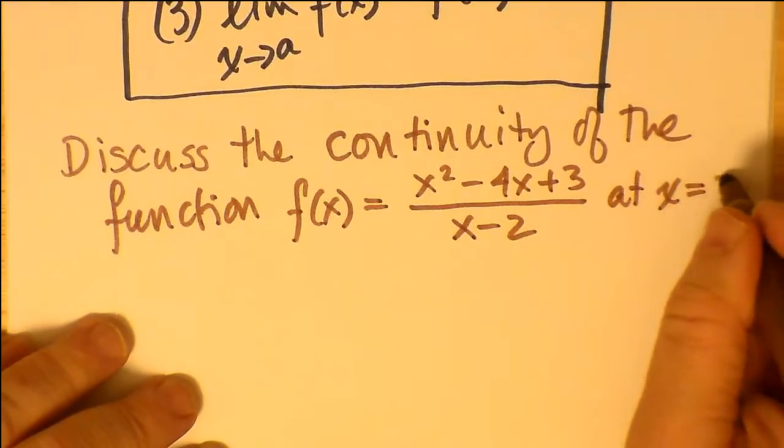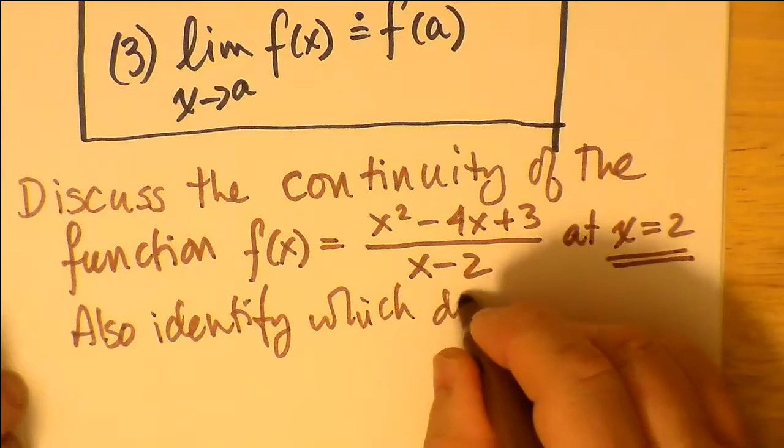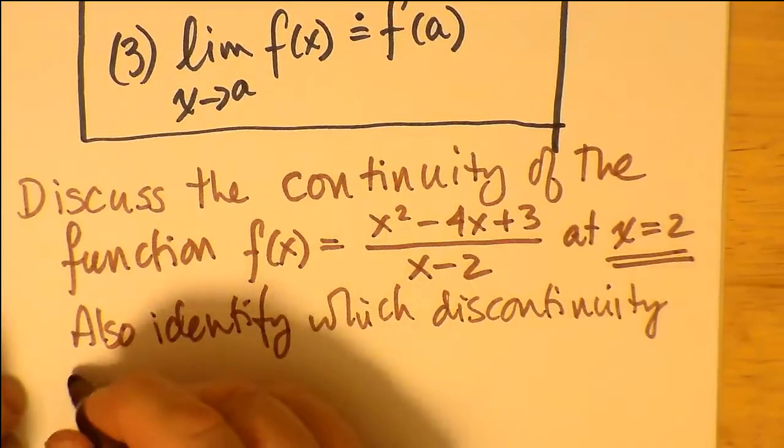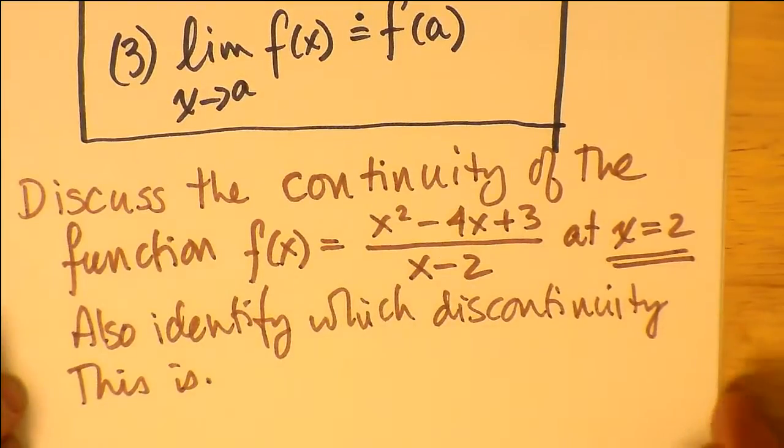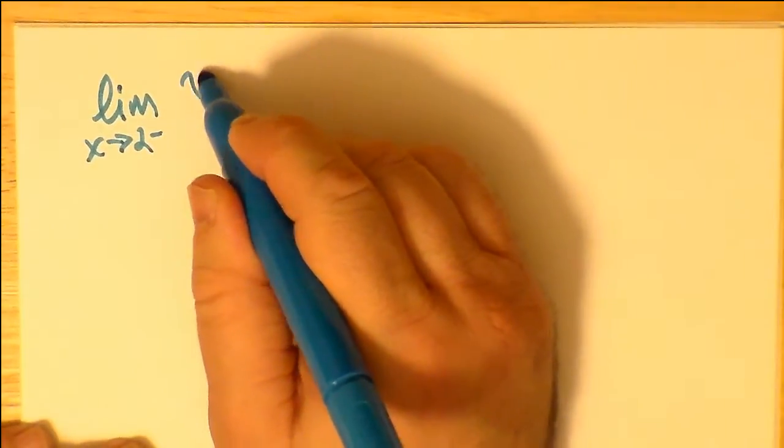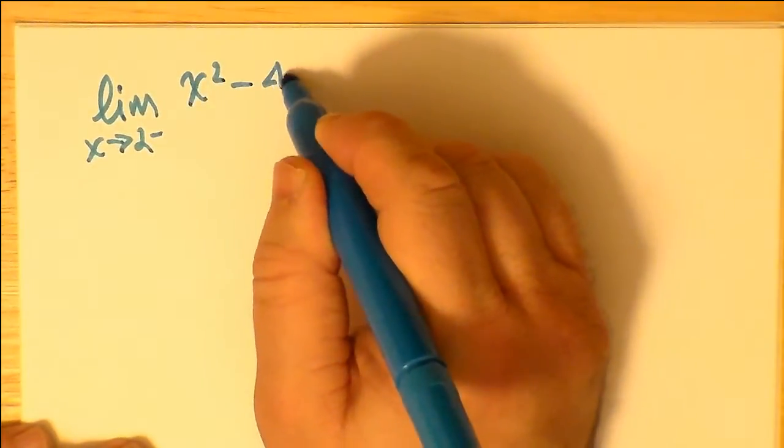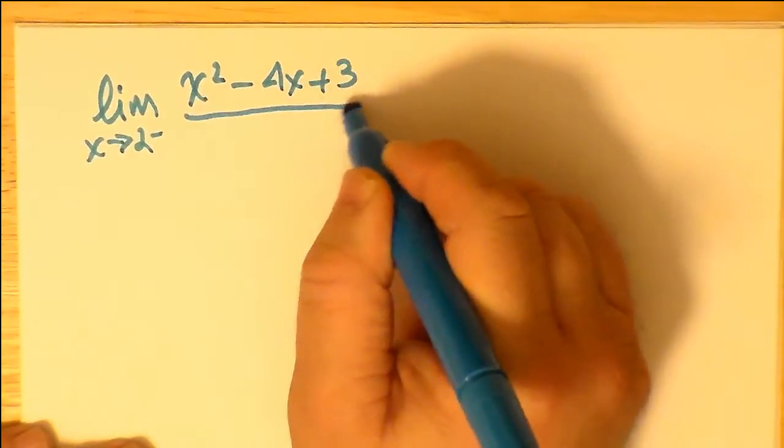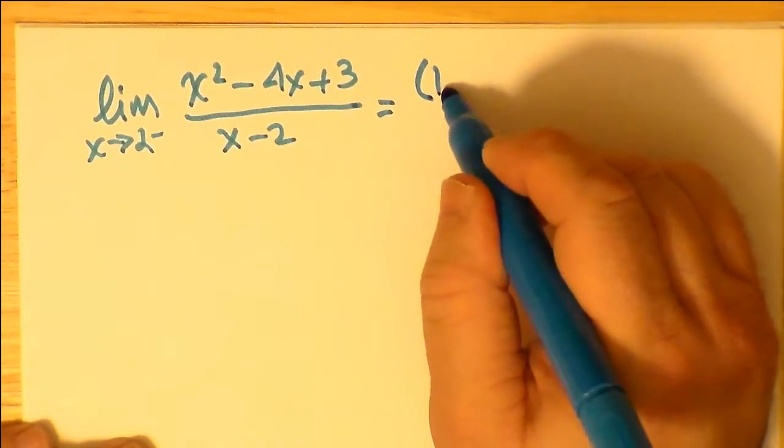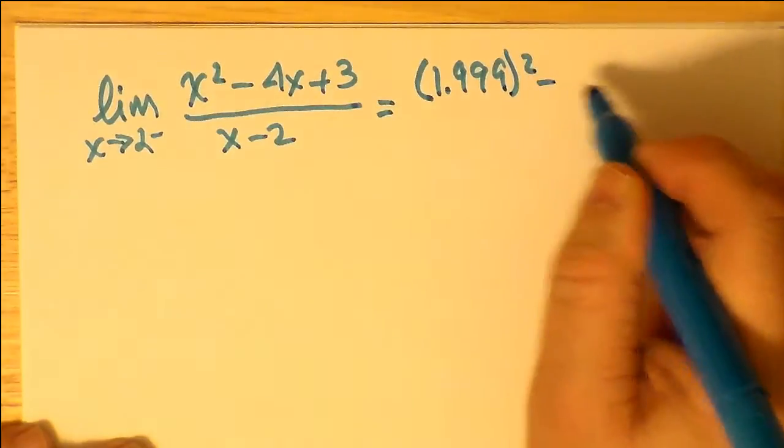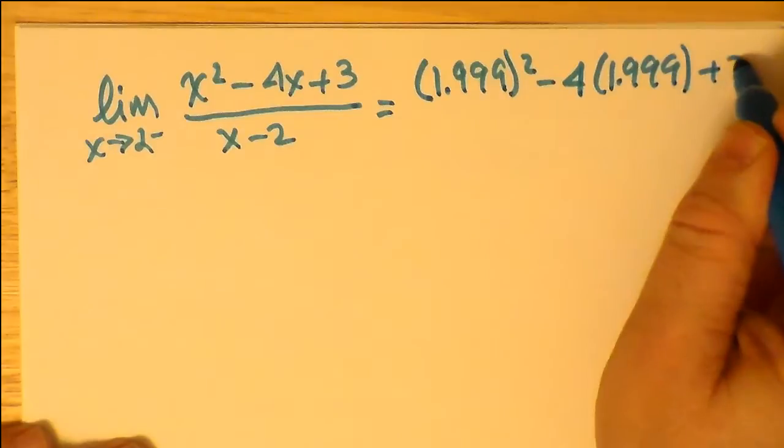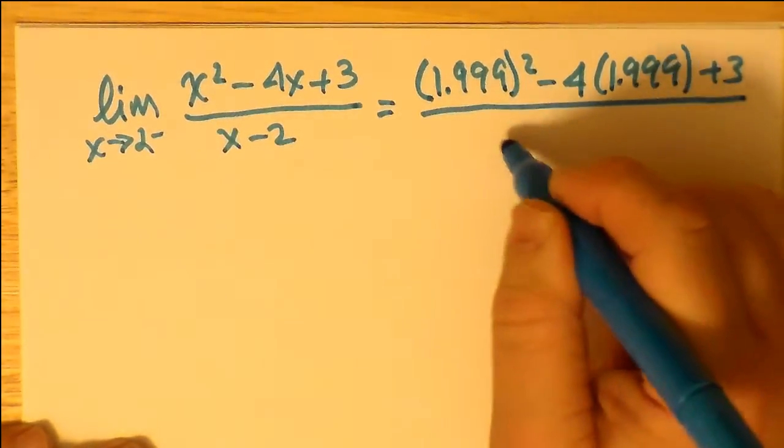So let's discuss the continuity of this quadratic x squared minus 4x plus 3 over x minus 2 at x equals 2 and identify which discontinuity this is. Let's take the limit as x approaches 2 from the right. Obviously, if we're having x minus 2 on the bottom, at x equals 2, the bottom is going to go to 0. But what happens when we put a number close to 2? This is close but to the left of 2. So we're going to put in 1.999 as our x value,